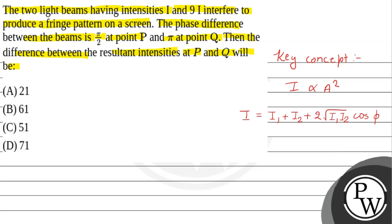And I₂ is the second intensity, that is 9I, which is given in the question. And φ is the phase difference, which is mentioned in the question.